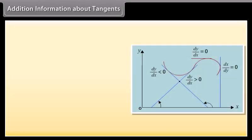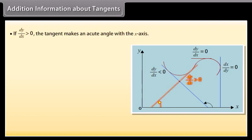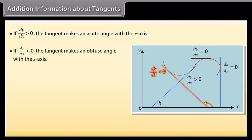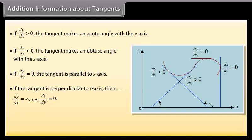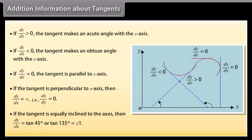Look at this figure. If DY/DX > 0, the tangent makes an acute angle with the X axis. If DY/DX < 0, the tangent makes an obtuse angle with the X axis. If DY/DX = 0, the tangent is parallel to the X axis. If the tangent is perpendicular to the X axis, then DY/DX = ∞, that is DX/DY = 0. If the tangent is equally inclined to the axes, then DY/DX = tan(45°) or tan(135°) = ±1.